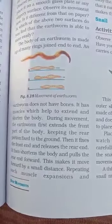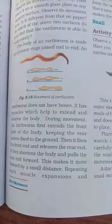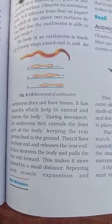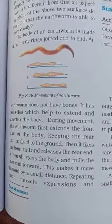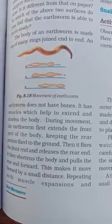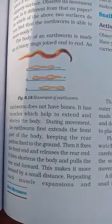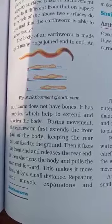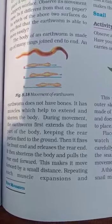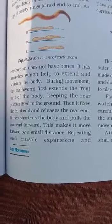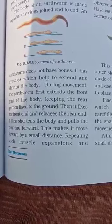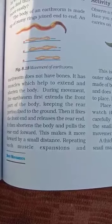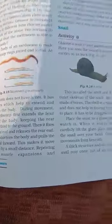During movement, the earthworm first extends the front part of the body, keeping the rear portion fixed to the ground. The front portion moves forward while the rear stays anchored. Then it fixes the front end and releases the rear end. It then shortens the body and pulls the rear end forward, making it move a small distance. This process of muscle expansion and contraction is repeated continuously.